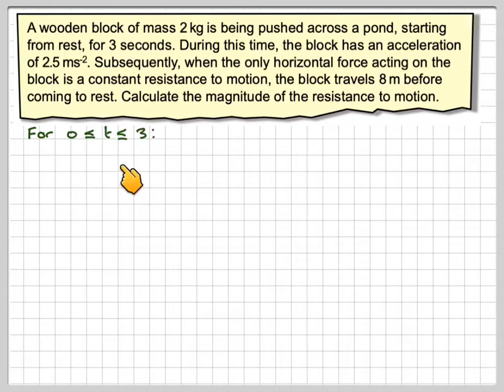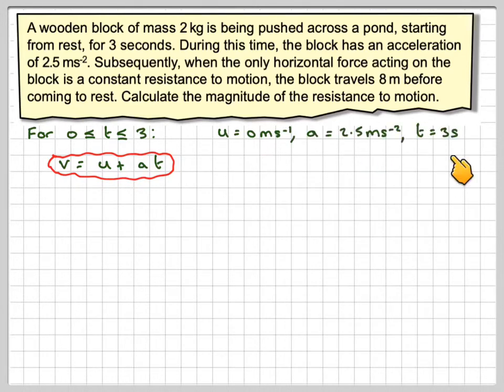So first of all, if we consider it between t being between 0 and 3, and finding what the final velocity would be at 3 seconds, you've got u is 0 because it goes from rest, a is 2.5 m per second, and t is 3 seconds. So substituting that in, we're going to get that v is 0 plus 2.5 times 3, which gives me that at 3 seconds the velocity would be 7.5 m per second.